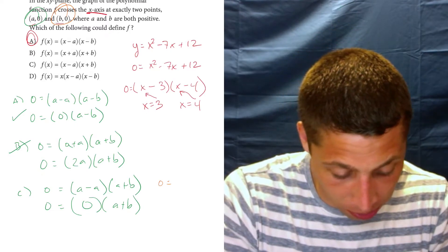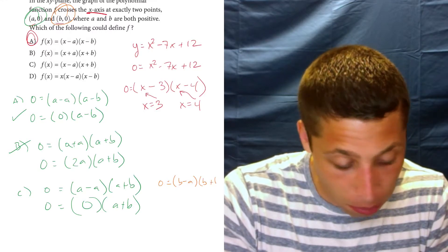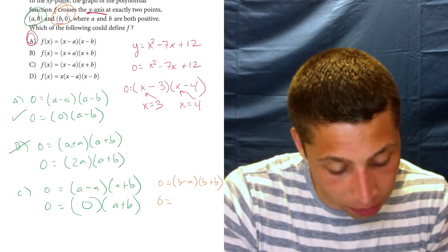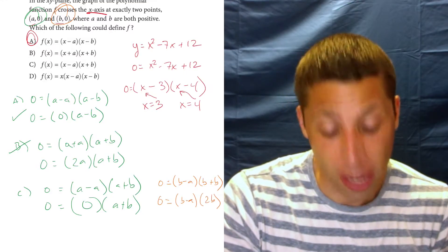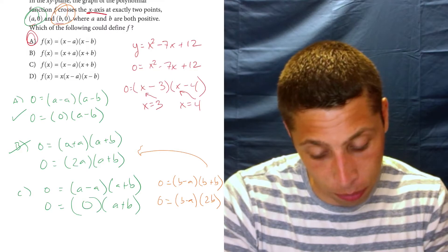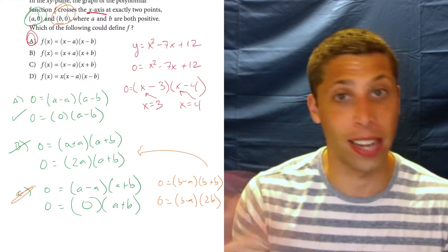So in that case, it would be 0 equals b minus a, b plus b, and here we've got a problem. That stays weird, and this doesn't get any better, 2b. So that's the problem that we had kind of with the other point in choice b, is we need them to be minus.